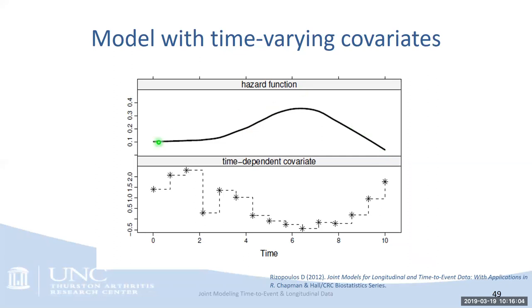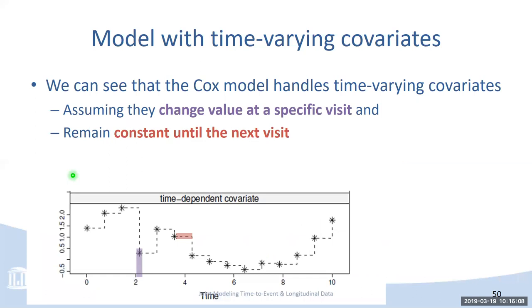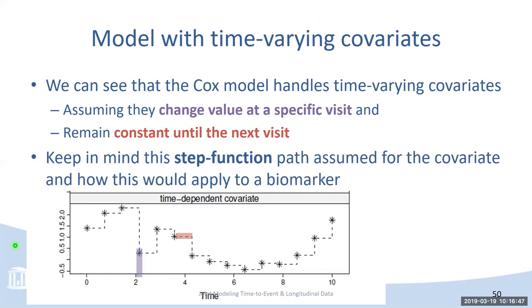Key things to remember about how the Cox model handles time-varying covariates: first, you assume the value changes at the specific visit when measured — that's an assumption that may be a limitation. Second, that value is assumed to remain constant until you see the participant again, represented by the horizontal step. Consider how this applies to a biomarker — in some contexts this assumption may be appropriate, in others it may not.